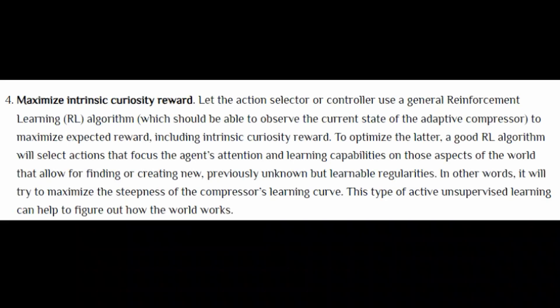Step four: maximize intrinsic curiosity reward. Let the action selector or controller use a general reinforcement learning algorithm, which should be able to observe the current state of the adaptive compressor, to maximize expected reward including intrinsic curiosity reward. To optimize the latter, a good reinforcement learning algorithm will select actions that focus the agent's attention and learning capabilities on those aspects of the world that allow for finding or creating new, previously unknown, but learnable regularities — in other words, maximizing the steepness of the compressor's learning curve. This type of active, unsupervised learning can help it figure out how the world works.